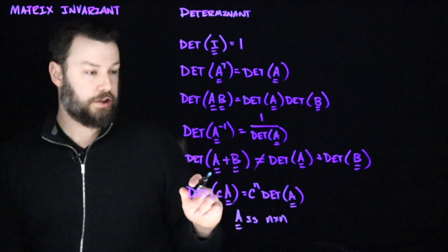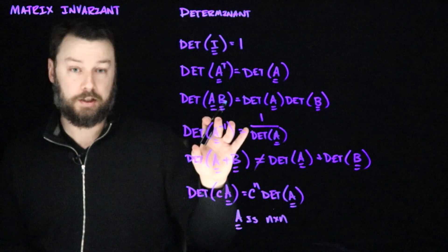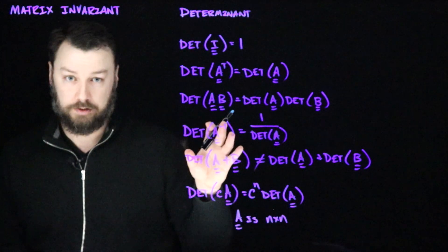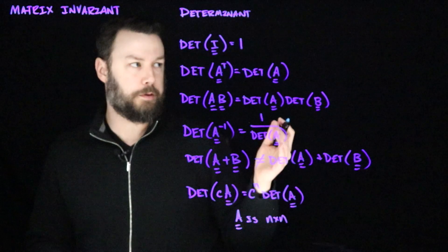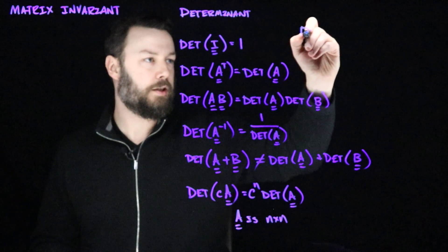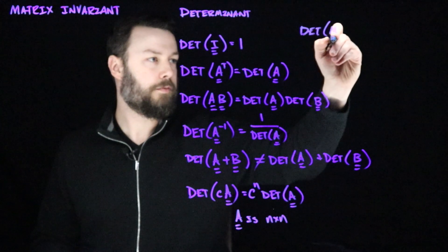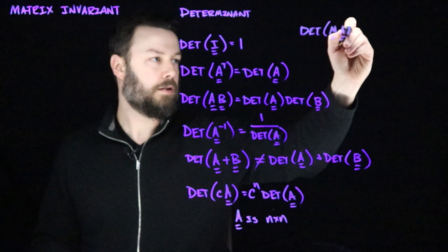So with these properties, in particular with the combination of these two properties, we can see why the determinant is also an invariant. So let's imagine, as before, that I have some invertible matrix M, and I'm in the situation where I take, I want to know the determinant of M, A, M inverse. So think of this like a change of basis, some invertible matrix M.